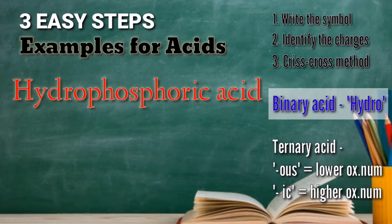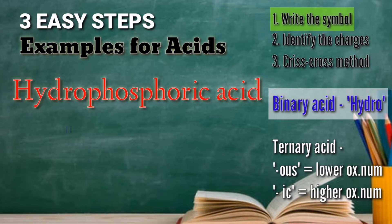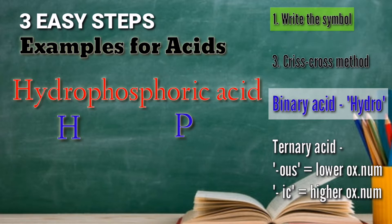Let's have the first step: write the symbol. 'Hydro' is hydrogen, and the symbol is H. 'Phosphoric' is phosphorus, and the symbol is P. Always remember that H should be written first in an acidic compound formula.